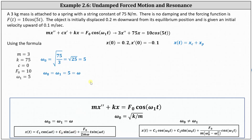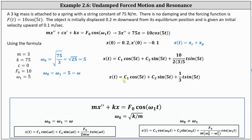Since we're using the resonance formula, we substitute 5 for ω, 10 for F₀, and 3 for m. This gives us a general solution which, after simplifying the fraction, is x(t) = c₁ cos(5t) + c₂ sin(5t) + (1/3)t sin(5t). We now need to determine c₁ and c₂ using the initial conditions.